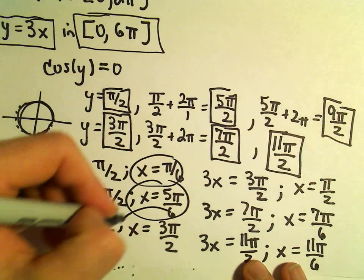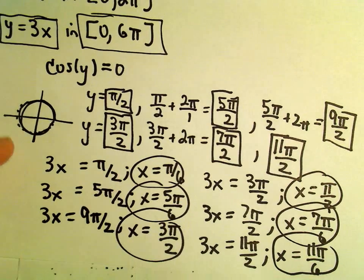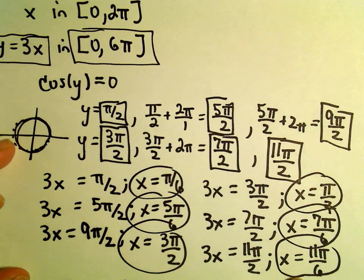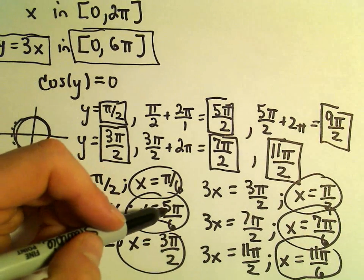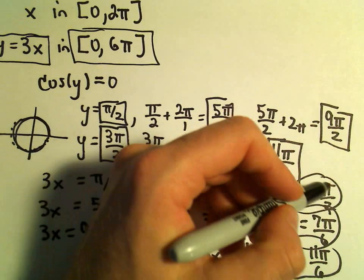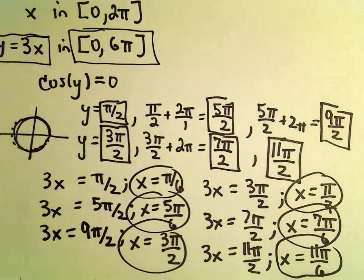Okay, so I've got 1, 2, 3, 4, 5, 6 solutions. And notice x again, we wanted it to be in the interval 0 to 2π. And all of these numbers, π/6, 5π/6, 3π/2, π/2, 7π/6, 11π/6, all of those fall in the interval 0 to 2π.